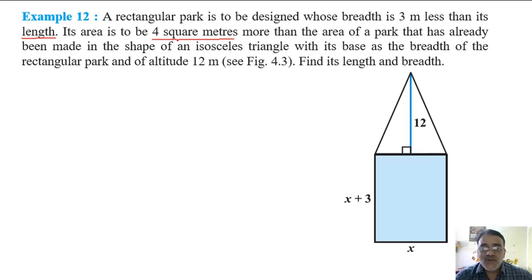That has already been made in the shape of an isosceles triangle with its base as the breadth of the rectangular park and of altitude 12 meters. So this is 12 meters, see this figure. Find its length and breadth.